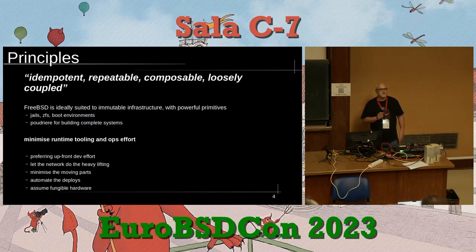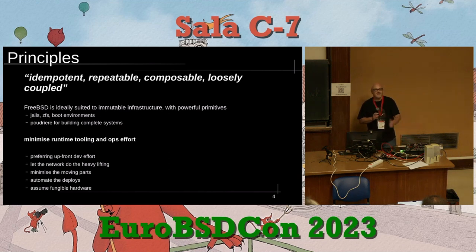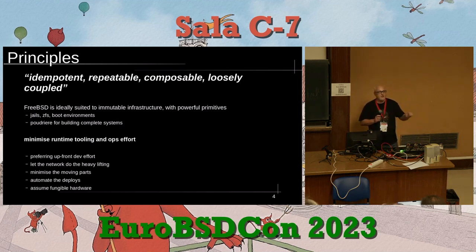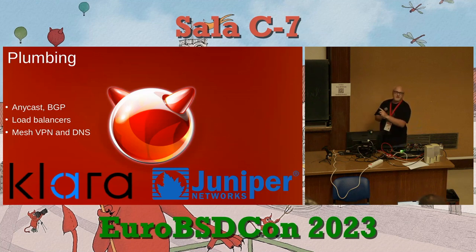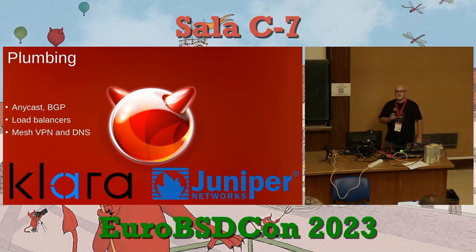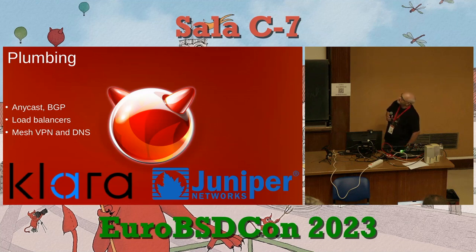Idempotent: I can run the job again and again and get the same result. Repeatable: if I do run it, it works the same way. Composable: clear separations between components so we can replace a web server, a proxy server, change databases, or change hosting providers without things breaking. We want to minimize operational tooling and effort whether in a team of five or spanning five continents. Two sponsors: Clara Systems and Juniper Networks.